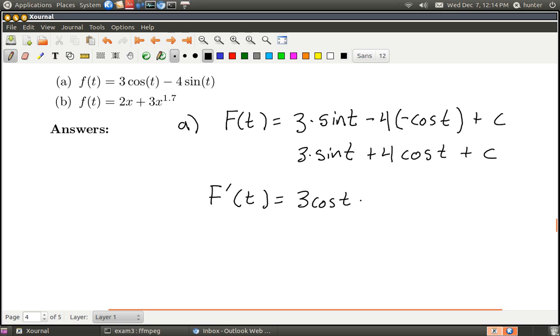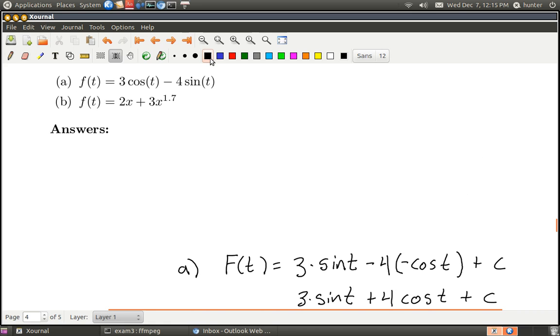And then when I take the derivative of cosine here I get minus 4 sine t, and then because c is a constant it just vanishes and this is right. Okay, so number one is done.